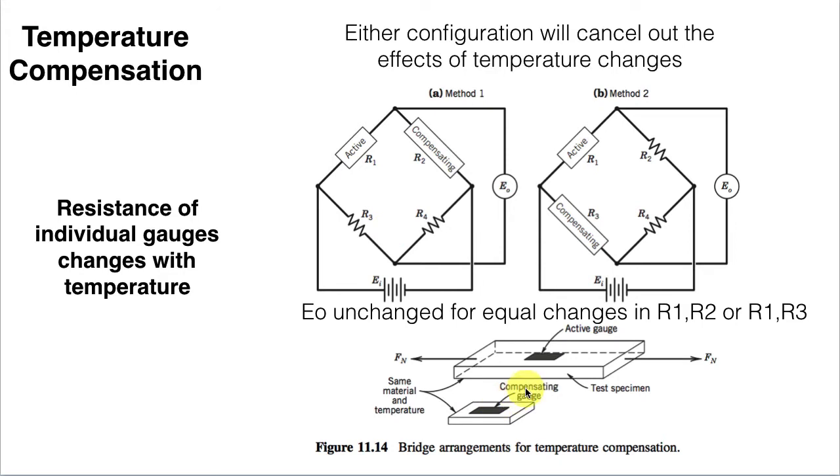So remember, we're putting some strain gauges onto a test specimen and causing that specimen to change its length by applying a stress. And by measuring with that active gauge, we can figure out how much stress we've applied or how big a load it is.